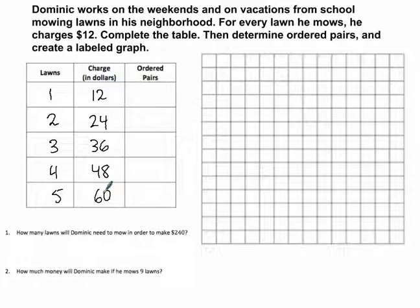To create an ordered pair, often referred to as x comma y, it's just a relationship between your two pieces of information. In our case, we're looking at a relationship between lawns and charge. This is the information that we're going to be graphing. So our ordered pair, let's organize it by lawns comma charge or dollars. One lawn, $12, we would call that point 1 comma 12.